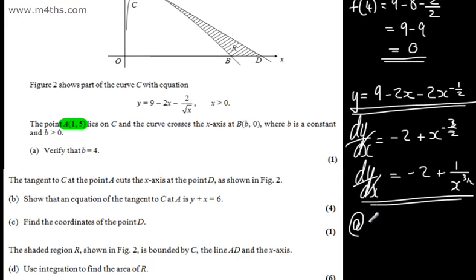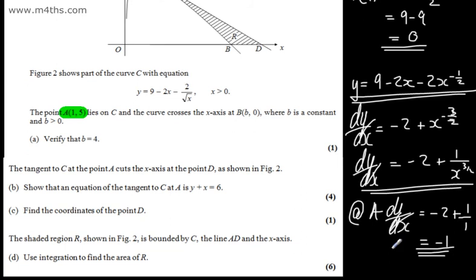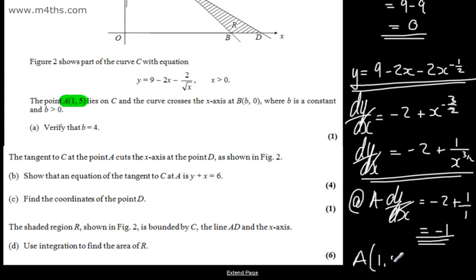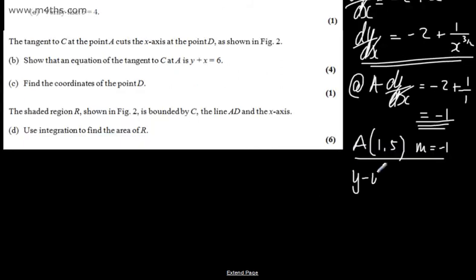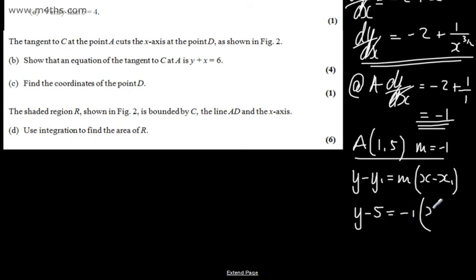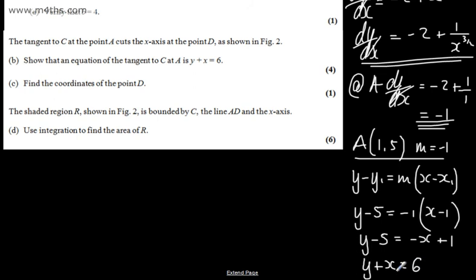At point A, substituting x equals 1: dy/dx equals negative 2 plus 1 over 1 to the power of 3 over 2, which gives negative 1. So point A is 1 comma 5 with gradient negative 1. Using y minus y1 equals m times x minus x1: y minus 5 equals negative 1 times x minus 1, giving y minus 5 equals negative x plus 1, and rearranging gives y plus x equals 6, as required.